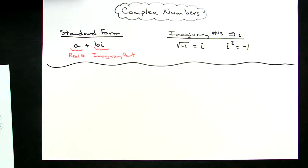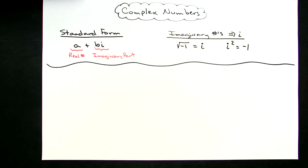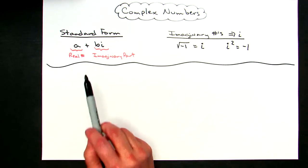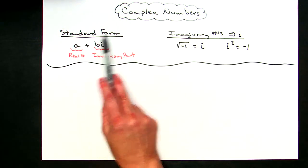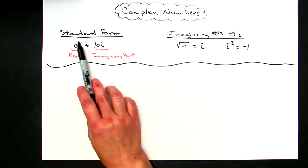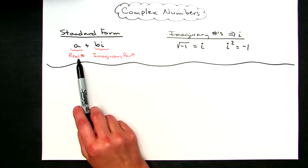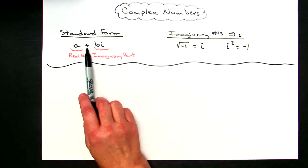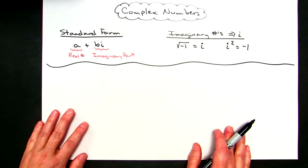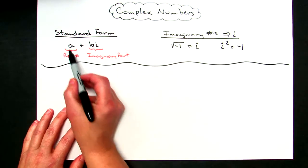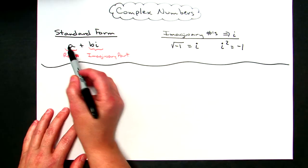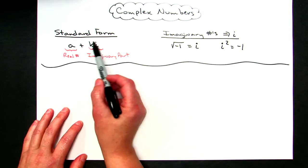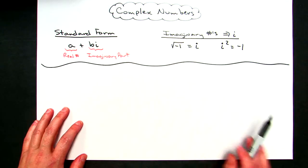Today we're going to take a look at some complex numbers and some operations with these complex numbers. Before we get started, let's review: if we have a complex number in standard form, it's going to look something like A plus Bi. It will have a real part, which is the A, and it will have the imaginary part, which will include the I — so the Bi.